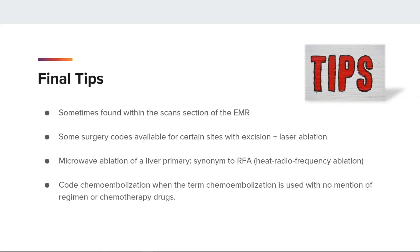A few tips to share: when there is no pathology or operative report associated, ablation and embolization procedures will often be documented in the scans portion of the EMR. Sometimes combination codes are available — for example, kidney laser ablation is code 15 with no pathology report, but code 24 is for local tumor excision plus laser ablation. For a liver primary with microwave ablation, use code 216, which is a synonym for RFA or radiofrequency ablation. Also, code chemoembolization when the term chemoembolization is used even without information on the type of regimen or chemotherapy drugs given.